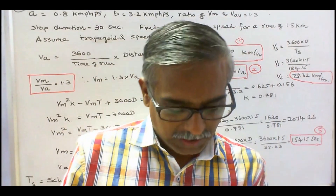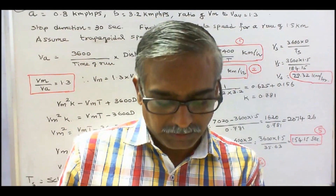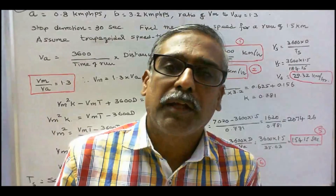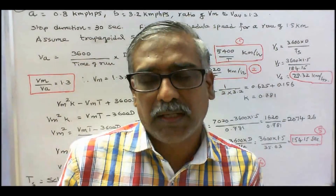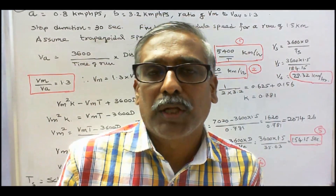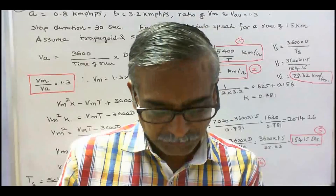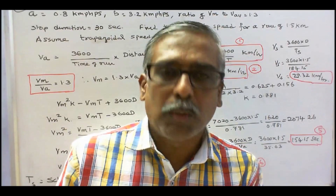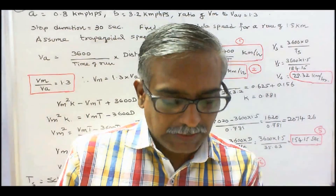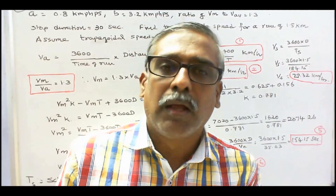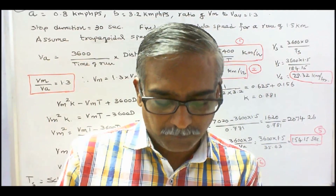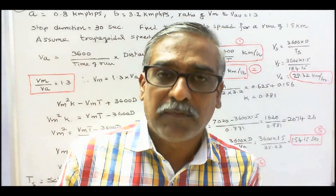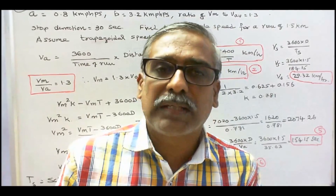Problem 2: an electric train is to have acceleration and braking retardation of 0.8 km per hour per second and 3.2 km per hour per second respectively. If the ratio of maximum to average speed is 1.3 and the time for stops is 30 seconds, find the schedule speed for a run of 1.5 km. Assume a simplified trapezoidal speed-time curve.